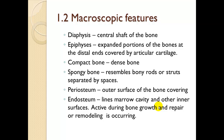Macroscopic features continued: we have the diaphysis — the shaft or main part of the bone. The epiphysis — the expanding portions at the distal ends covered by articular cartilage. Children have an epiphyseal plate from which they grow. When you get older, it forms a suture line and becomes solid after remodeling. Compact bone is very dense. Spongy bone resembles bony rods or struts separated by spaces. The periosteum is the outer surface covering. The endosteum lines the marrow cavity and inner surfaces, and is active during bone growth and repair.